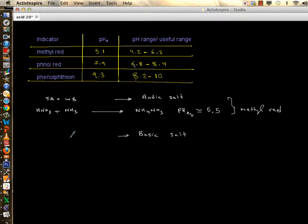Basic salt means that your base is rather strong and your acid is weak. CH3COOH, ethanoic acid, plus a strong base sodium hydroxide will give you sodium ethanoate CH3COONa plus H2O. The pH of this salt at equivalence is approximately 9.5.